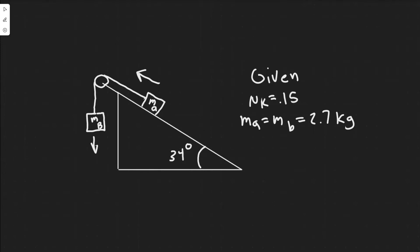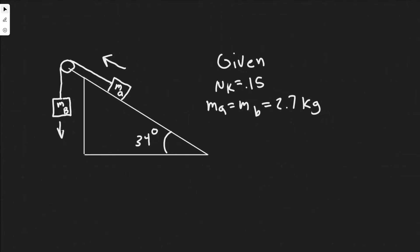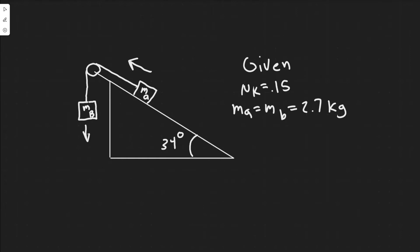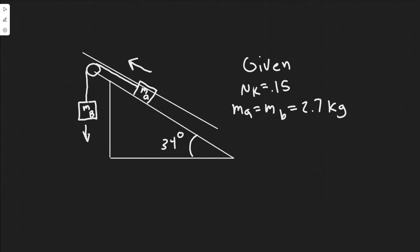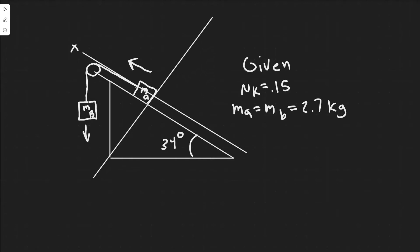Whenever you're doing a problem like this dealing with boxes and pulleys, you want to go ahead and draw a free body diagram for each of the boxes. When you do a free body diagram on an incline, you want to label your axes. The x-axis runs along the incline, and the y-axis is perpendicular to that line.